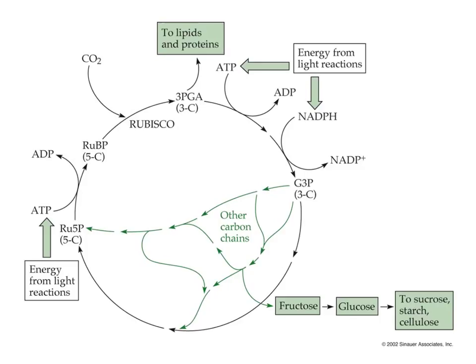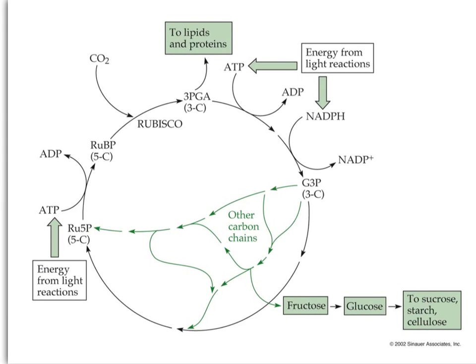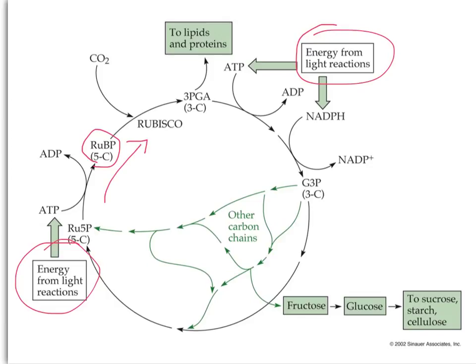Here's the Calvin cycle, the dark reactions of photosynthesis, in which energy from the light reactions is used to keep this cycle going. With multiple turns around this cycle, the five-carbon intermediate and the three-carbon intermediate — for which C3 photosynthesis is named — are involved. These processes put CO₂ together into six-carbon sugars, fructose and glucose, which together make the disaccharide sucrose, and polymers of glucose make starch and cellulose.